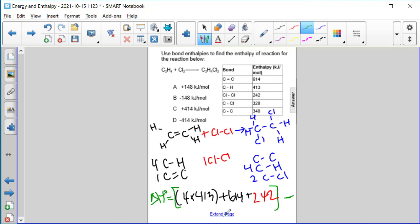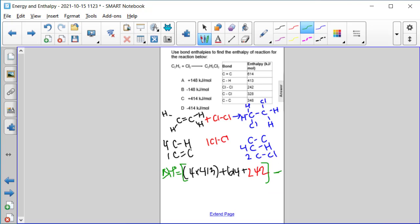Then we're going to subtract our products. So we have a carbon-carbon single bond, which is 348, plus 4 times 413, plus 2 times carbon-chlorine single bond, 328. And again, I'll sneak some brackets there so you can see the reactants and the products separated.